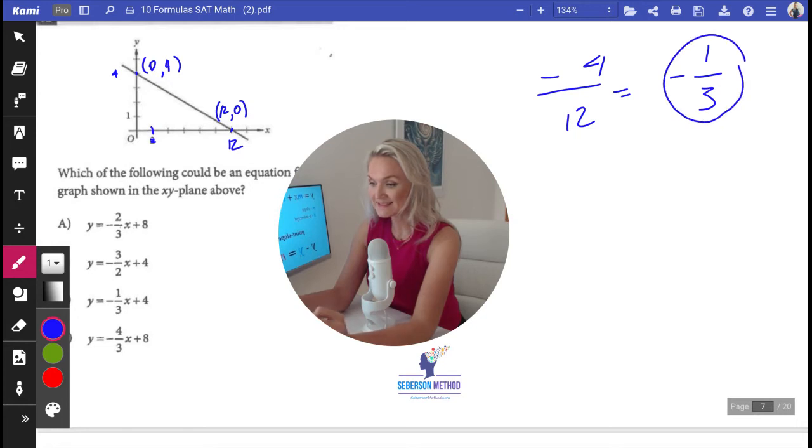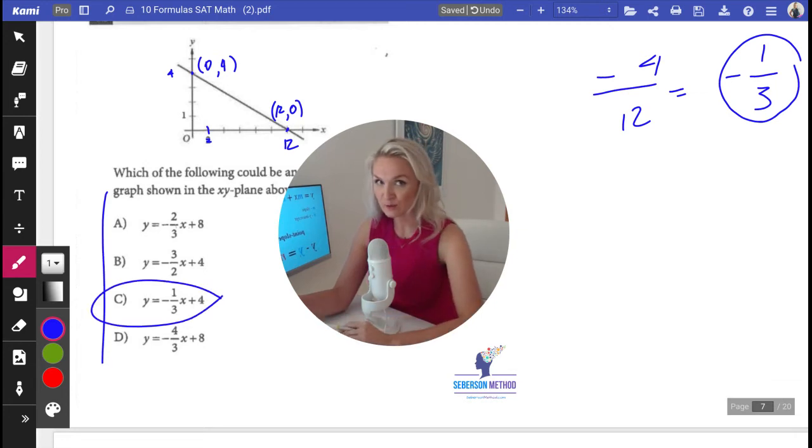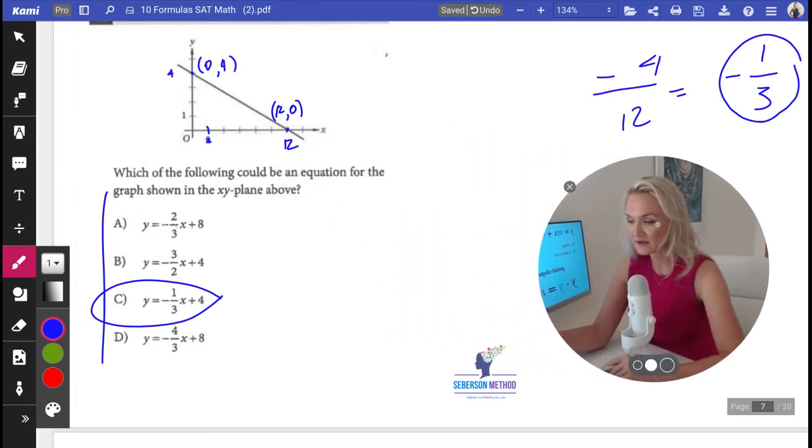So this is my m. This is my slope. All I need to do now is scan my answer choices and find my honey boo, find my equation of a linear function.